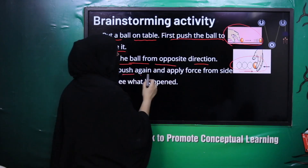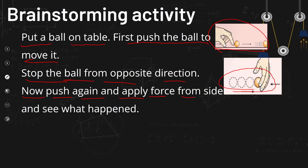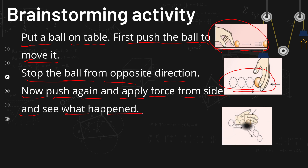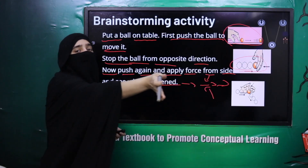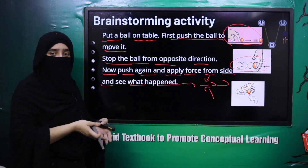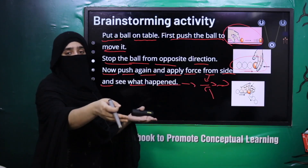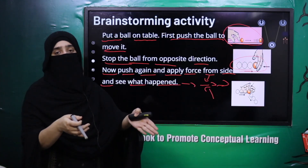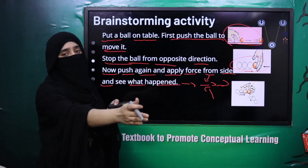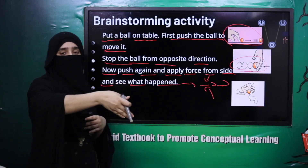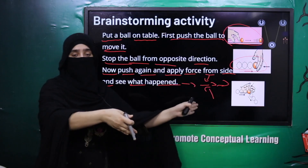Then push again and apply force from the side and see what happens. Ab ball jo hai bilkul straight move kar raha hai, to usko kisi bhi side se rokne ki koshish karein. Aap dekhenge ki ball ki motion start rahegi lekin uski direction change ho jaayegi. For example, aapne yahan se ball push kiya aur aapne kisi bhi side se us ball pe force lagaai, to ball apni motion us taraf start kar dega.